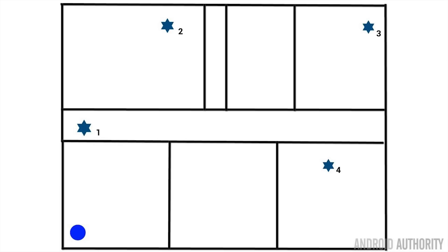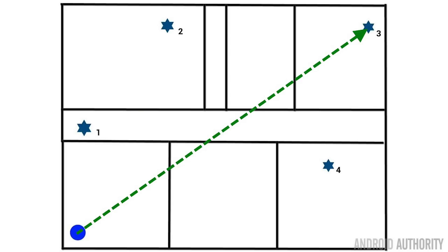One board stayed connected to my computer over a USB cable, and then the other board I moved to different locations. Here's a map of my house: in the bottom left-hand corner is where the computer and the first board was. The little blue stars around the place are the different locations I moved the second board to — into the hallway, into another room, into the far corner of the house, and back around to another place.